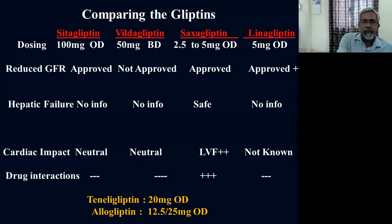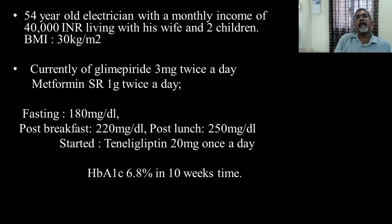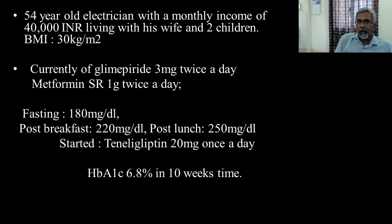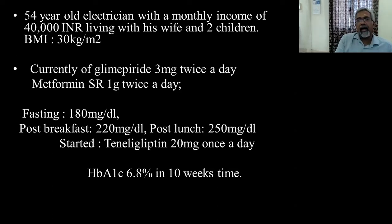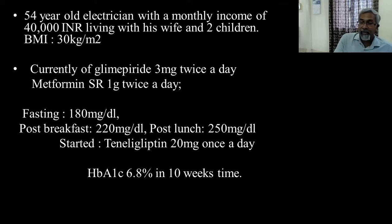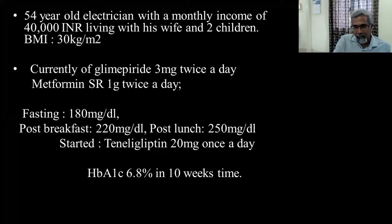Clinical case: A 54-year-old electrician, monthly income of 40,000, BMI of 30 kg/m² (significantly obese by Indian standards), on glimepiride 3 mg twice daily and metformin 1g twice daily, with fasting glucose of 180 and elevated postprandials. He was started on teneligliptin 20 mg once daily and glucose values came down. If he were only on metformin and could afford it, a gliptin would have been my second drug of choice, though now SGLT2 inhibitors are becoming an important second-line option in obese patients.